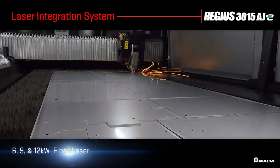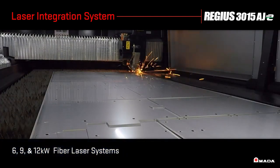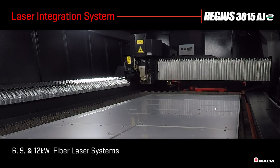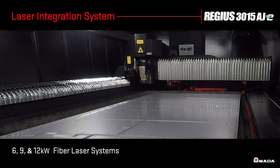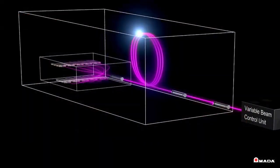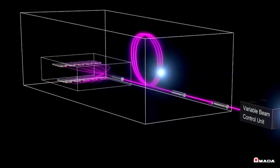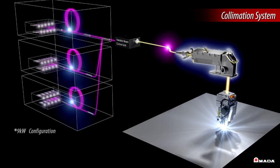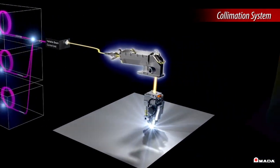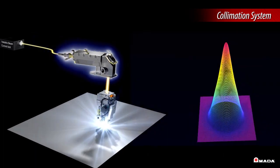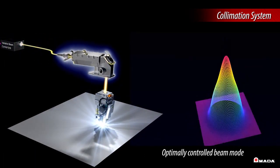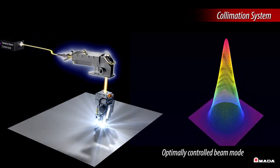With 6, 9, or 12 kilowatts of fiber cutting power, the Regis series demonstrates the expanded range of its technology. The collimation system automatically controls the beam diameter and configuration, so the Regis is capable of a 1-second pierce time on thick plate.